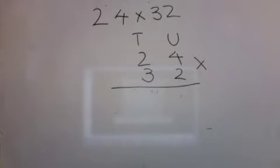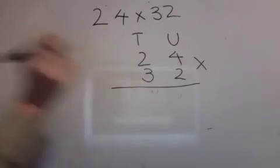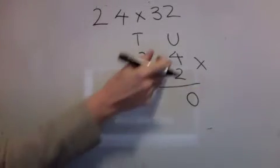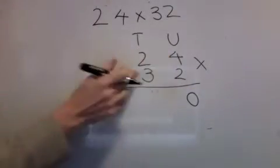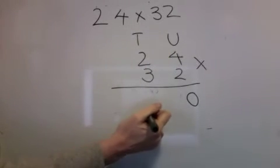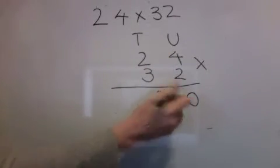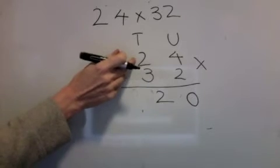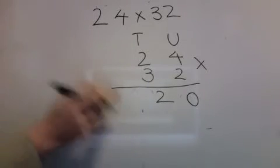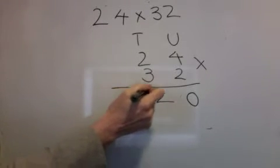24 times 32. I'm going to multiply by 30 first. Nought down. Units: 3 times 4 is 12 — 1 on the doorstep, 2 in the box. 3 times 2 is 6 — let the man in off the doorstep.